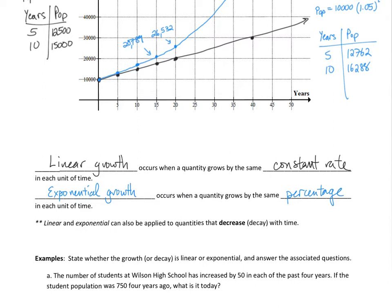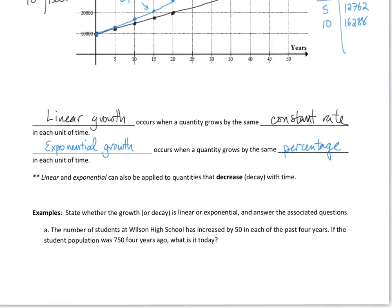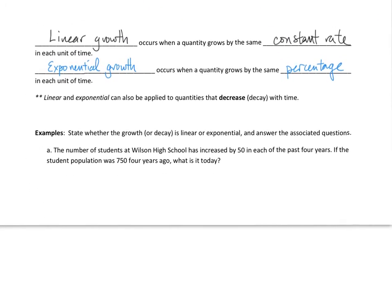So let's take a look at a couple examples. And we just want to state whether it is growth or decay, exponential or linear. So we just have to make a couple of choices here. Pick one, growth or decay, and then linear or exponential. So first example, example A. The number of students at Wilson High School has increased by 50 in each of the past four years. If the student population was 750 four years ago, what is it today? So we have to figure out here, is it linear or exponential?